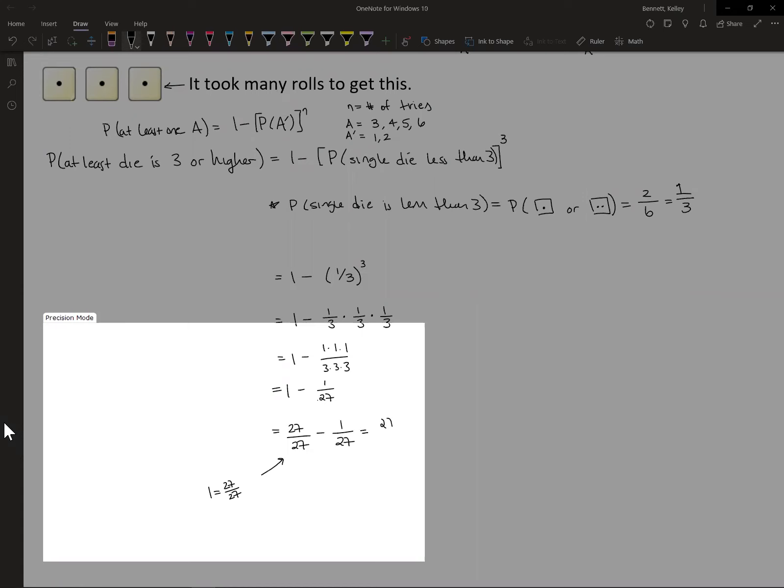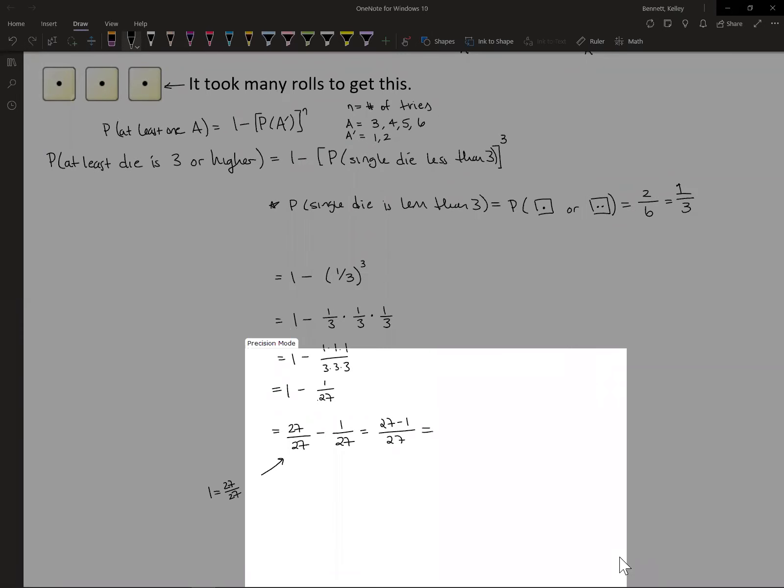Now I'm going to subtract off my one over 27. And guess what? 27 minus one over 27. So my answer here, if I needed it in fraction form, 26 over 27. If I needed it in decimal form, I'm going to put it in my calculator, which is in the other room. But I'm sure you could just hit 26 divided by 27 and you could get your number that way as well.